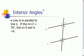Here we have that line M is parallel to line N, and that the measure of angle 3 is 70 degrees. So we know that this angle here is 70 degrees.